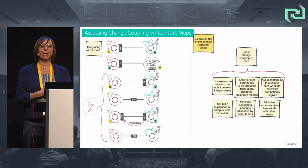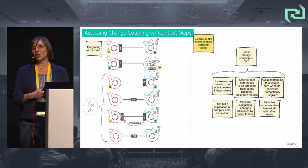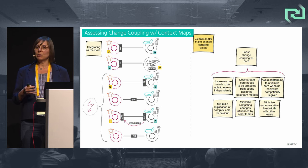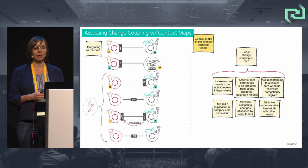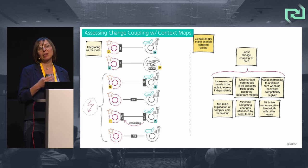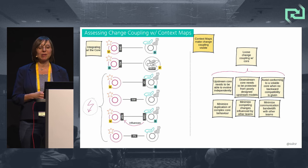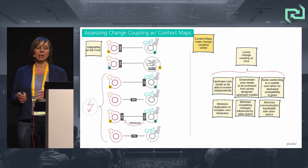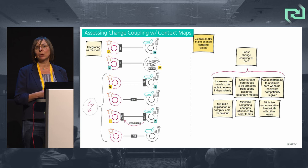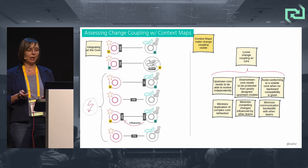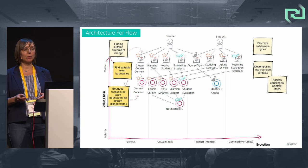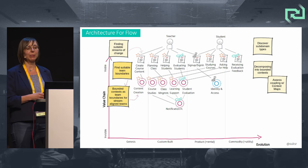Context map patterns help make change coupling visible. They address coupling via contracts, model propagation, and inter-team relationships. Context maps can expose problematic dependencies leading to tight change coupling and slowing down our fast flow of change. But let's go back to our Wardley map.